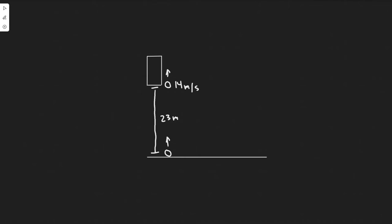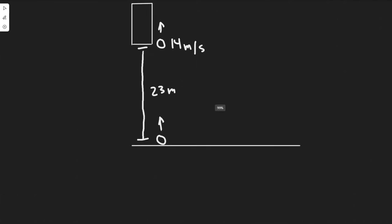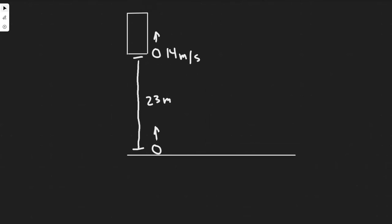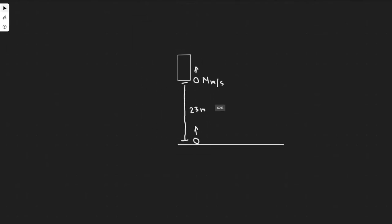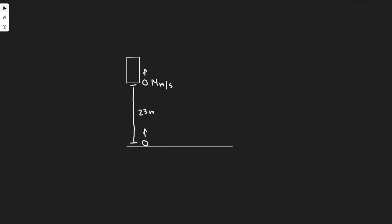In this problem, we're going to be solving for a bunch of things, but let's try and understand what's going on. We only have this window that is 23 meters above the street. The ball is going to be thrown from the bottom of the street upwards, and once it passes by the window, it's going to be going 14 meters per second. The easiest way to solve these is just by breaking down each one.